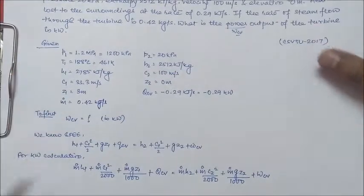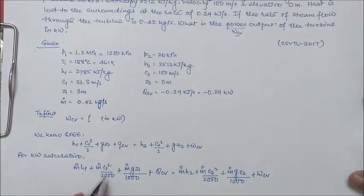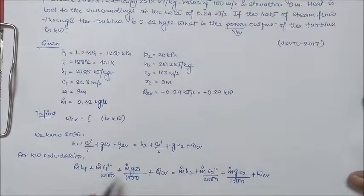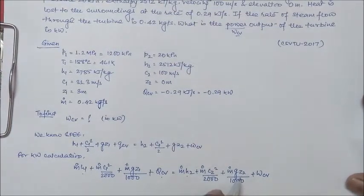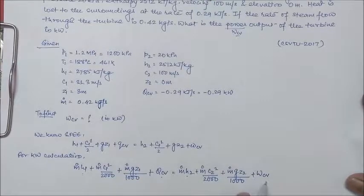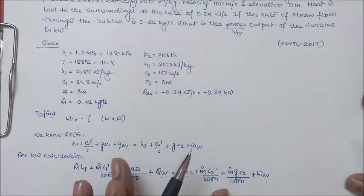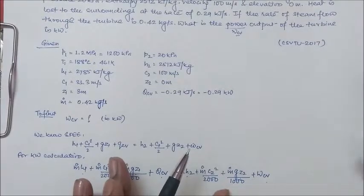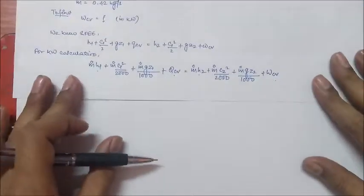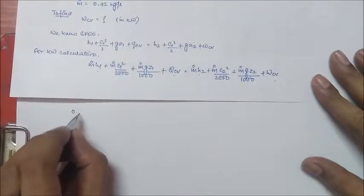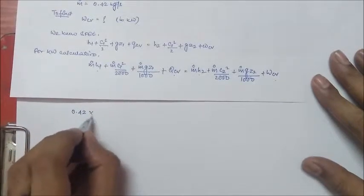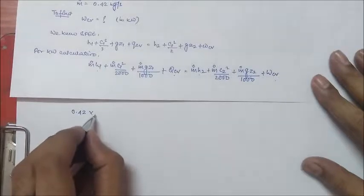Now, what I will be doing is that, see, we have H1 given in the question, we have C1, we have Z1, we have QCV, we have H2, we have C2, we have Z2. We have to find out WCV. Just put the values and find the unknown, nothing more than that. So we have 0.42 into—I am just putting the values.